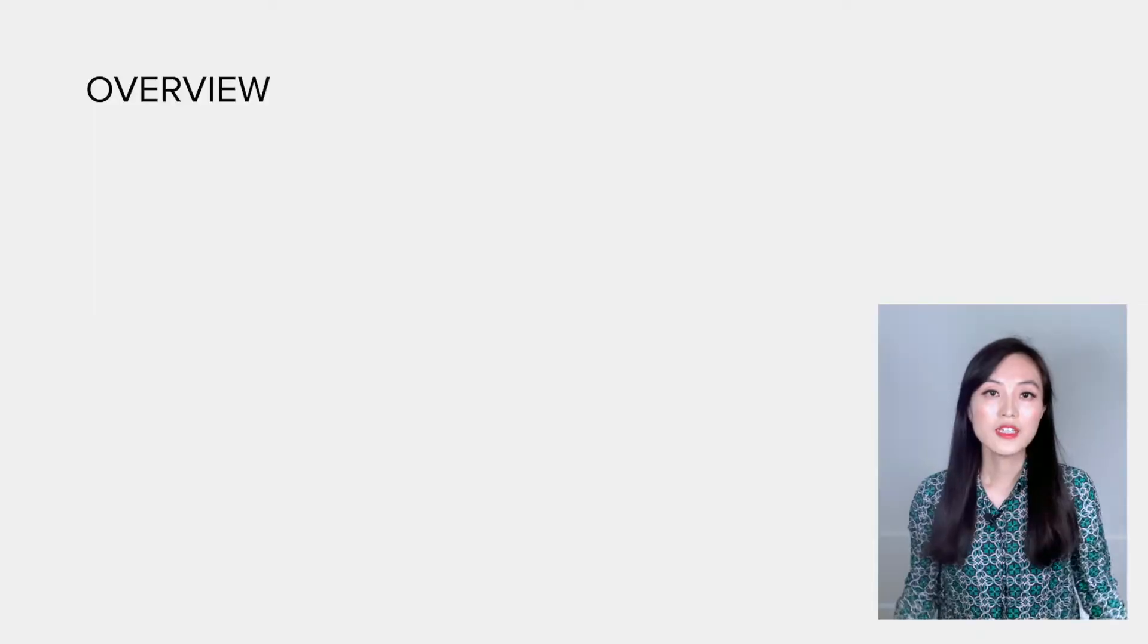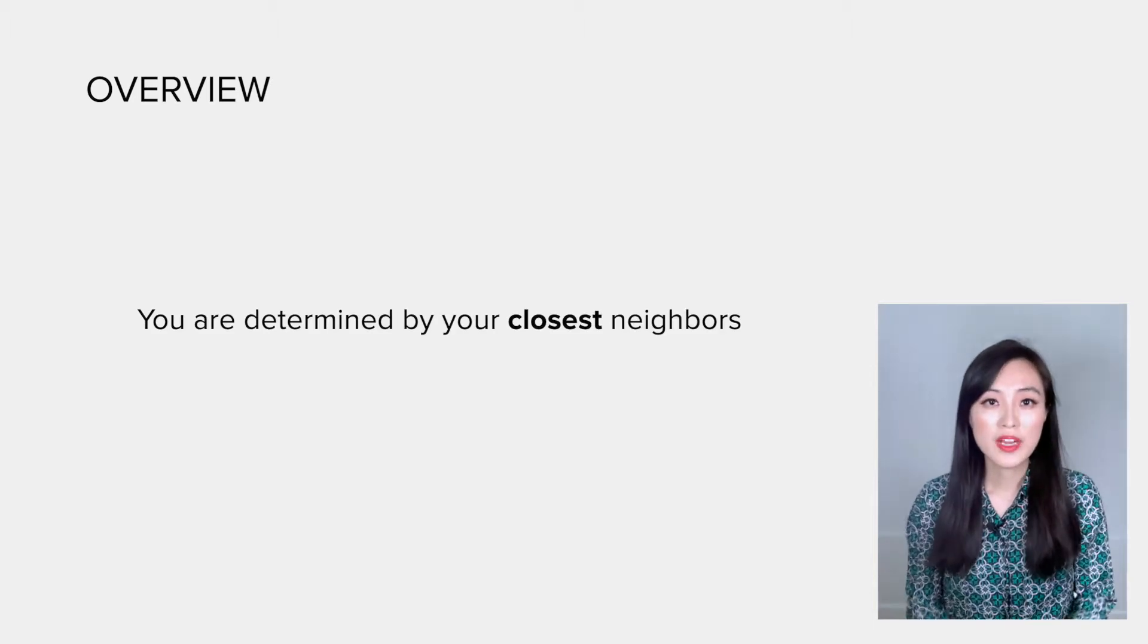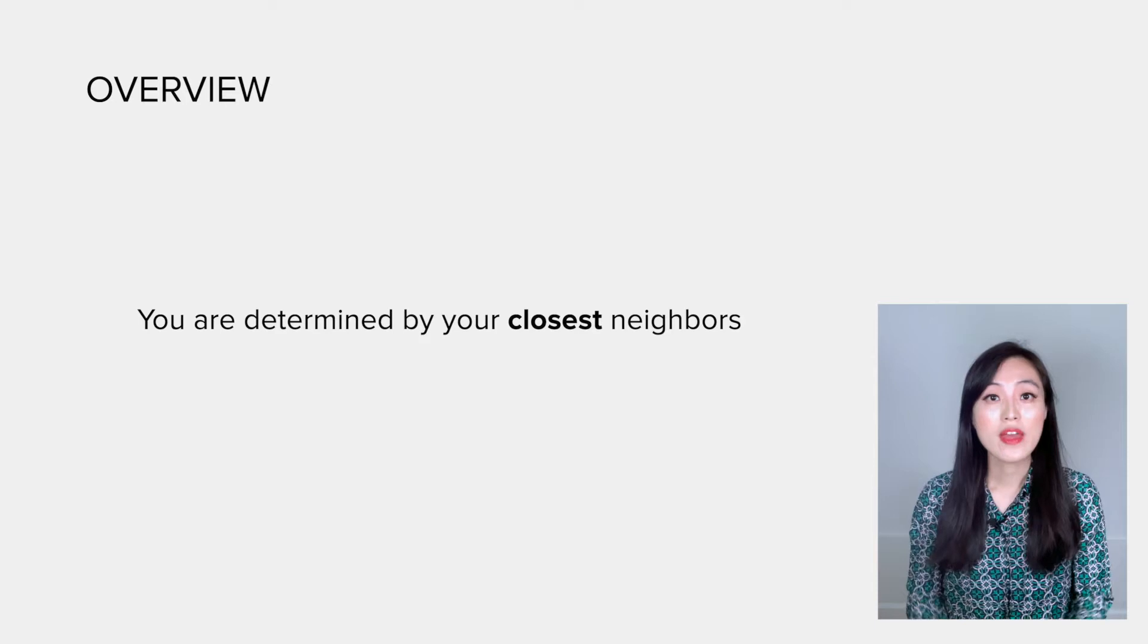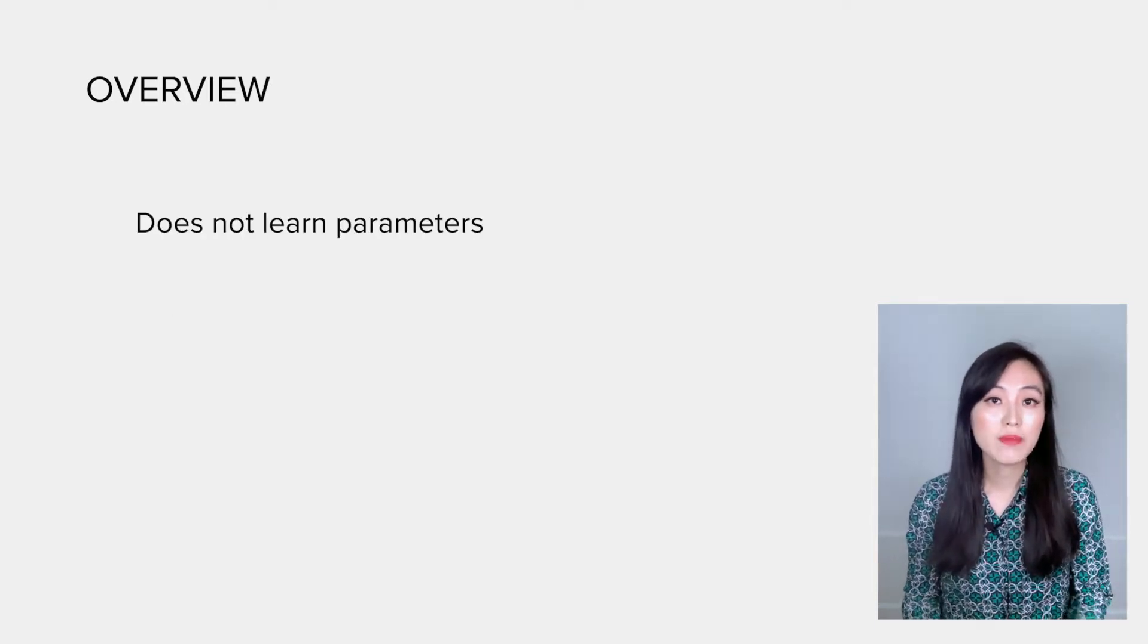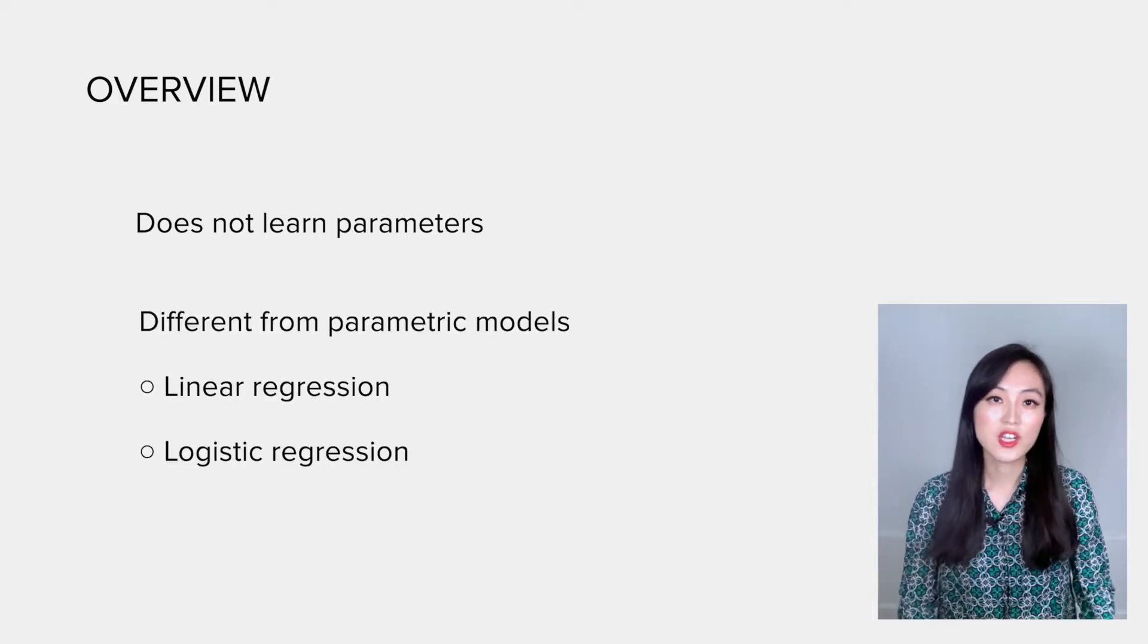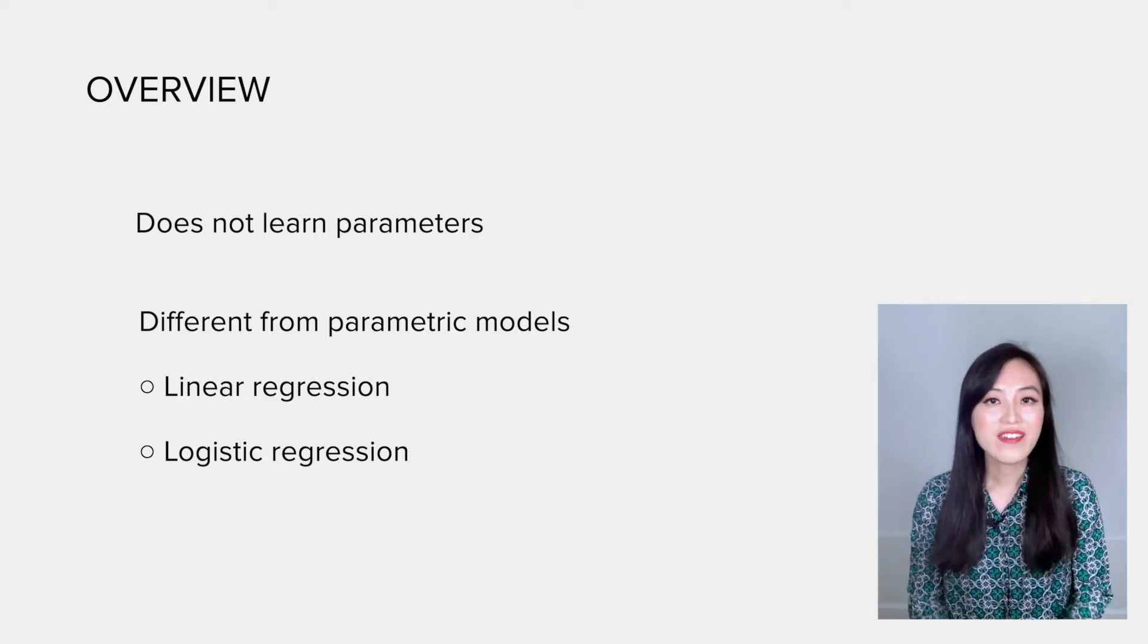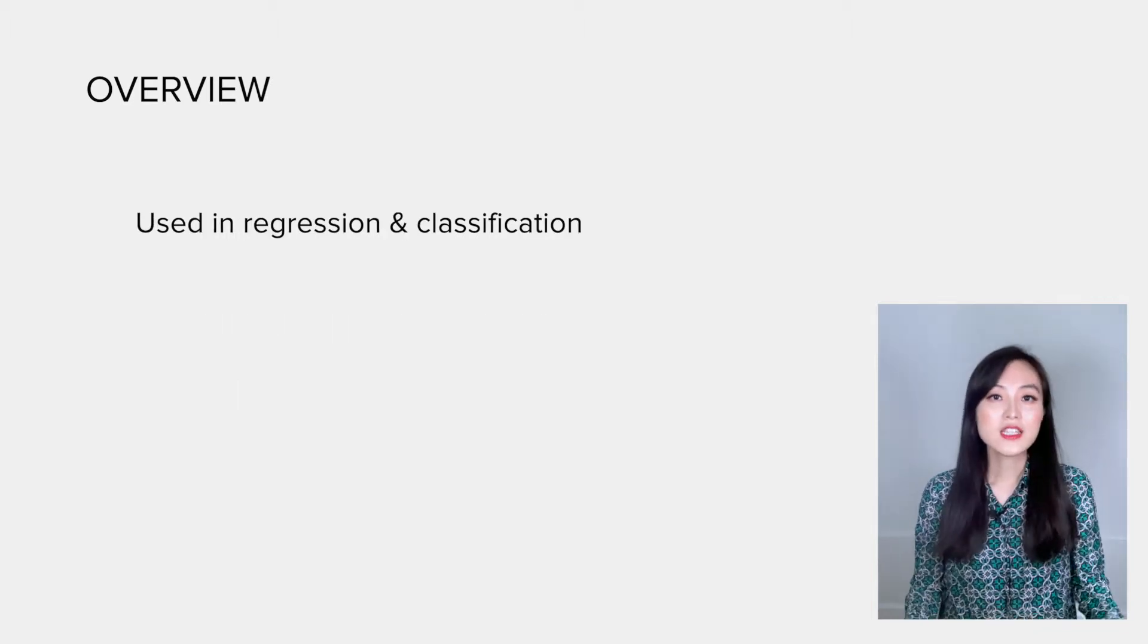Let's get started. The philosophy of k-nearest neighbors can be summarized in one sentence: you are determined by your closest neighbors. As I mentioned before, it's simple and powerful. It's simple because it does not need to learn any parameters to make predictions. This is different from models that need to learn parameters such as linear regression and logistic regression. That's also why KNN is a kind of non-parametric model.